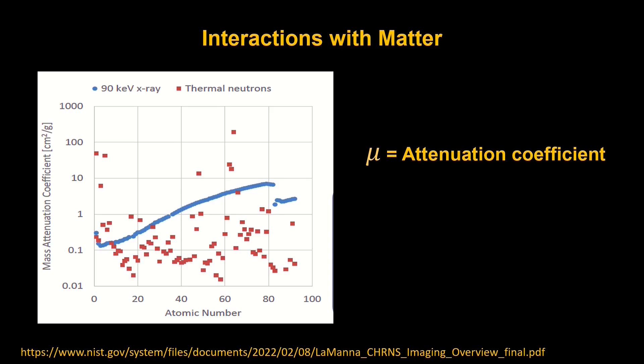The attenuation coefficient, which is plotted here for both X-rays and neutrons versus atomic number, is where X-ray and neutron imaging begins to differ quite a lot. If you look at the trend for X-rays, the increasing blue line tells us that the attenuation coefficient generally increases with atomic number. But if you look at the relationship between attenuation coefficient and atomic number for neutrons, it's quite chaotic. And this difference has an effect on what we see when we image.